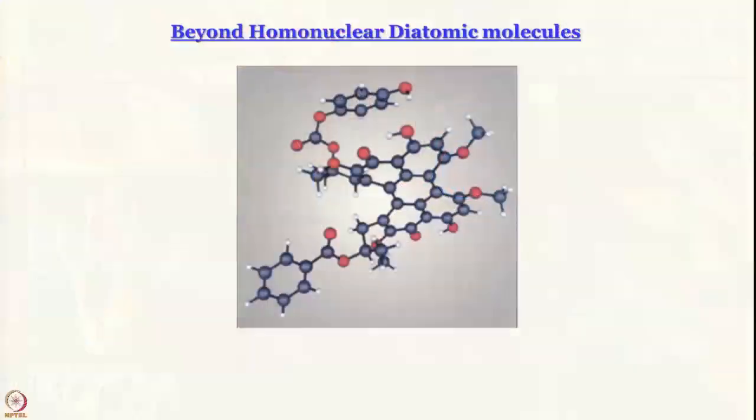Until now we have come a long way in molecular orbital theory. We have learned how to handle only homonuclear diatomics — H2+, H2, F2, and so forth. But we do not want to stop there. We do not want to talk only about homonuclear diatomic molecules; we want to talk about molecules which are neither homonuclear nor diatomic.